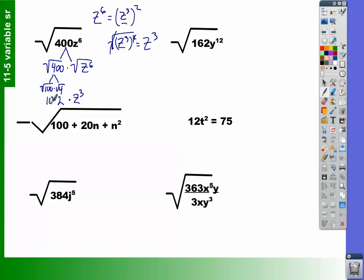So 10 times 2 times z to the third is equal to 20z to the third. And so that is your final answer. And this one did end up being a whole number answer. Not too bad.